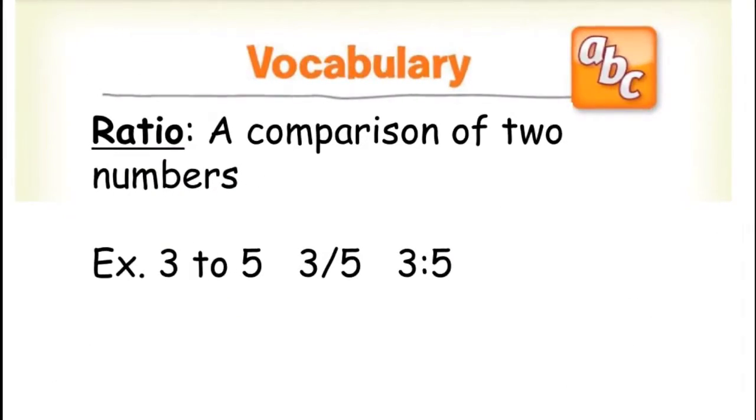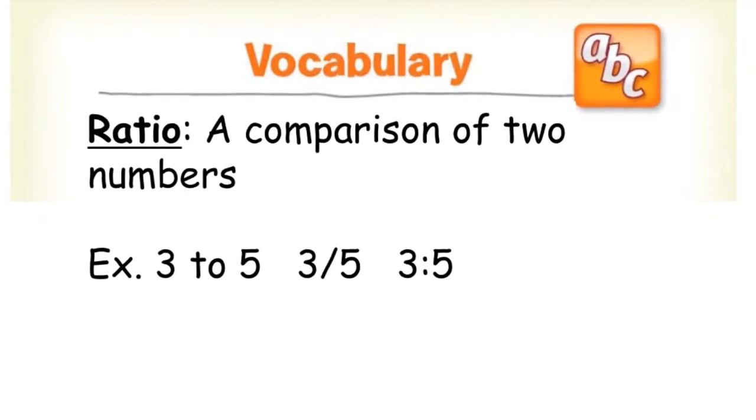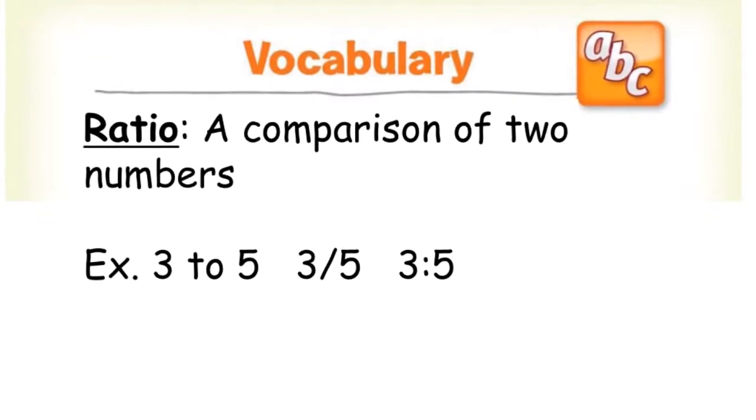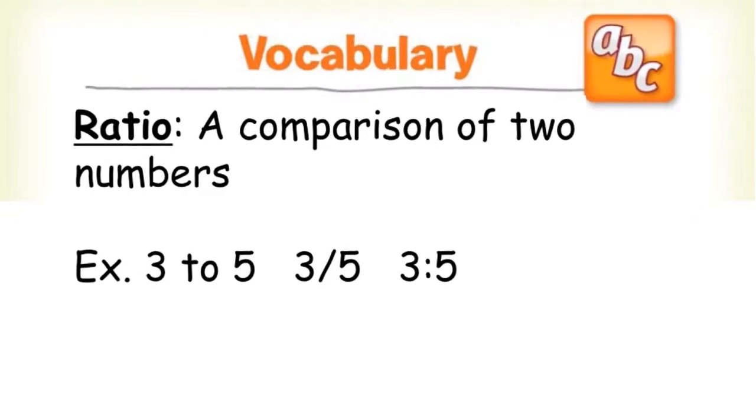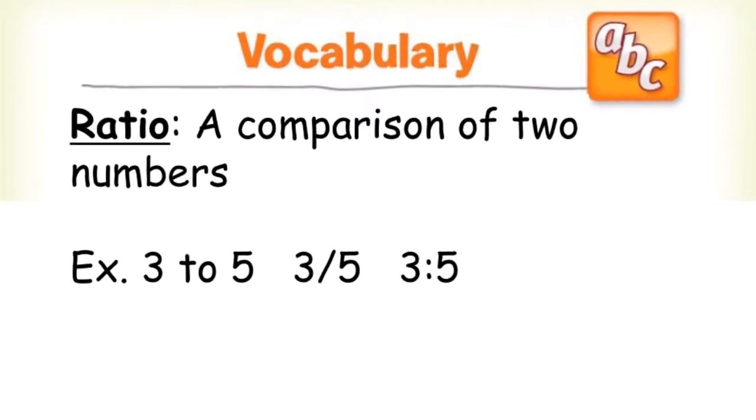A ratio is a comparison of two numbers. If you look below, there are three different ways to write ratios, but they're all read the same way. You would say three to five for each one.